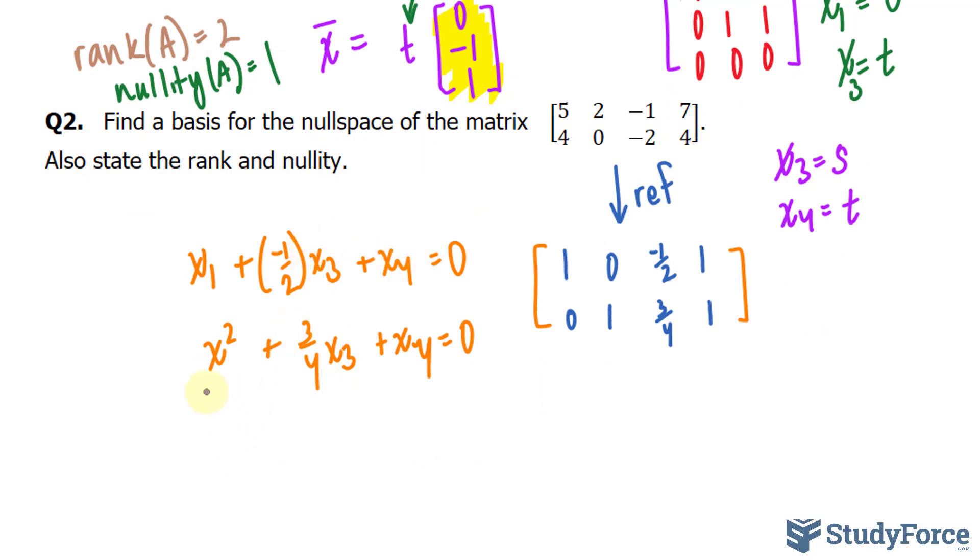I'll rewrite it in terms of x sub 1 being equal to the left side. So x sub 1 is equal to 1 over 2 times s minus t. And the other equation will be x sub 2 is equal to negative 3 over 4 s minus t.